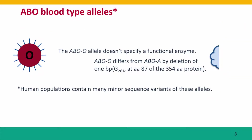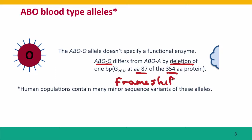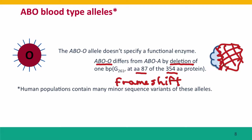The O allele doesn't specify any sugar modification at all because it's a defective gene. The O allele differs from the A allele by the deletion of just one base pair. That base pair is in the codon for amino acid 87 of a 354 amino acid protein — about a quarter of the way along. A one base pair deletion creates a frameshift, which destroys the coding capacity of all the rest of the protein, and the cell produces a truncated, non-functional protein. So no sugar modification is put on with the O blood type allele.